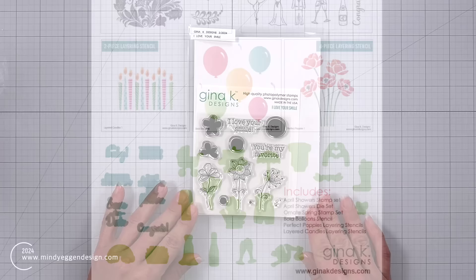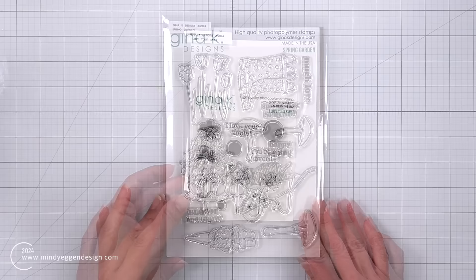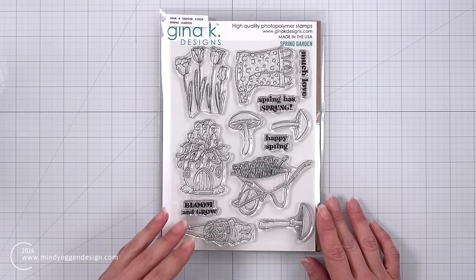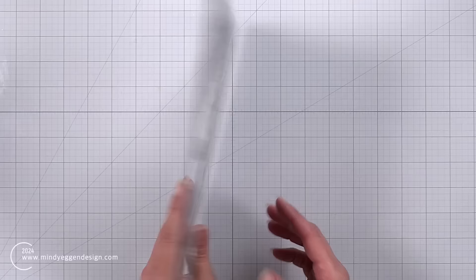The first stamp set I am going to share is called I Love Your Smile. It is a small stamp set. I do use this one in my card project today. It's just got those really cute whimsy images. Then this is a spring garden, sweet little rain boots, a wheelbarrow and mushrooms and some fun spring sentiments.